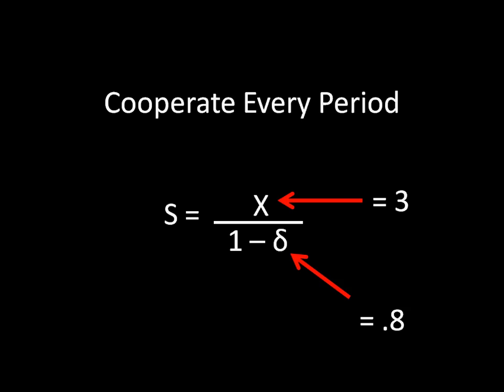So the 3 goes where the x is, the discount is 0.8, so that's going to take over for the delta. We plug those numbers in, and we calculate that, and we get 15. This is really a pretty simple case, but there are some more complicated calculations we're going to need in order to solve these games properly.